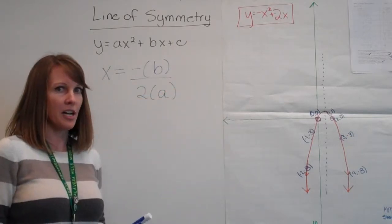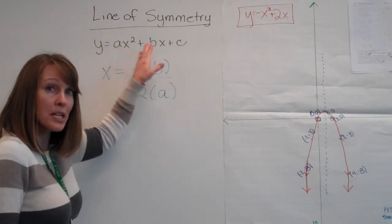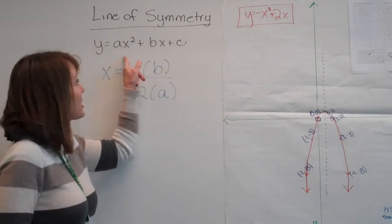Alright, b and a, what are we talking about here? Well, remember the equation of a quadratic is ax squared plus bx plus c, these are our numbers.